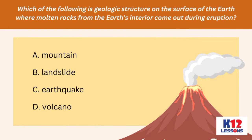Which of the following is a geologic structure on the surface of the earth where molten rocks from the earth's interior come out during eruption? A. Mountain. B. Landslide. C. Earthquake. D. Volcano.